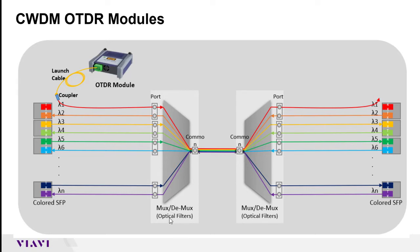The main advantage of this is that in a CWDM wavelength you typically have passive devices like muxes or dmuxes that will filter out all wavelengths but that specific CWDM channel. So in the case that you want to be able to test through an actual mux port and onto the common fiber.